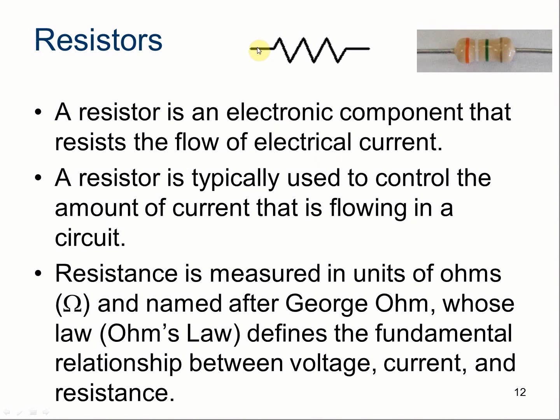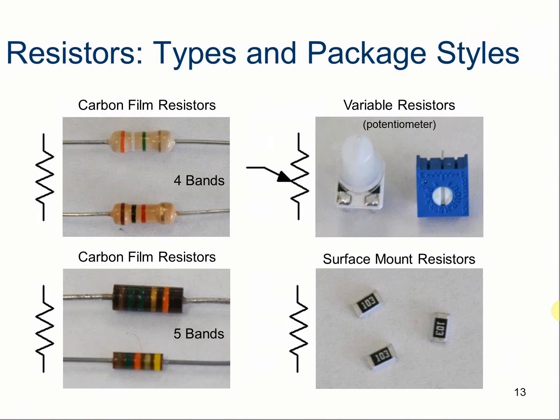Now, resistors. We've seen resistors before. They have the little zig-zag pattern for our symbol. And this is what a resistor looks like in real life. One version of a resistor. You can notice the color pattern. Resistors control the amount of current. They resist the flow of the current. A resistor is typically used to control the amount of current that's flowing in our circuit. And the resistance is going to be measured in ohms, or the omega symbol. Named after George Ohm, who of course came up with Ohm's Law that helps us define our relationship between voltage, current, and resistance.